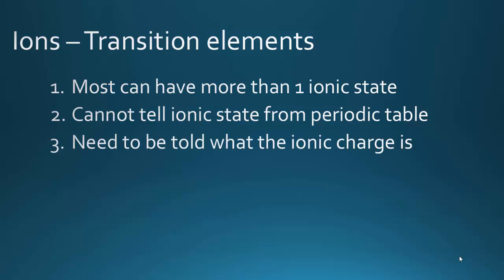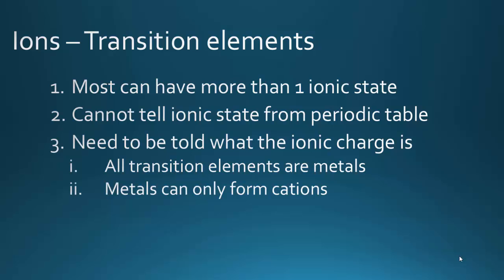So you're going to need to be told what the ionic charge is. Now, all transition elements are metals. Metals can only form cations. So transition elements will only form cations. They will always be a positive ion.